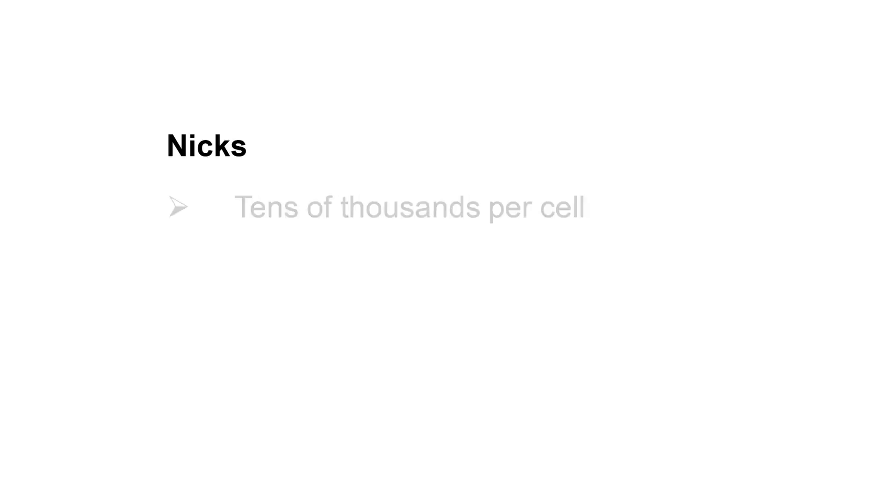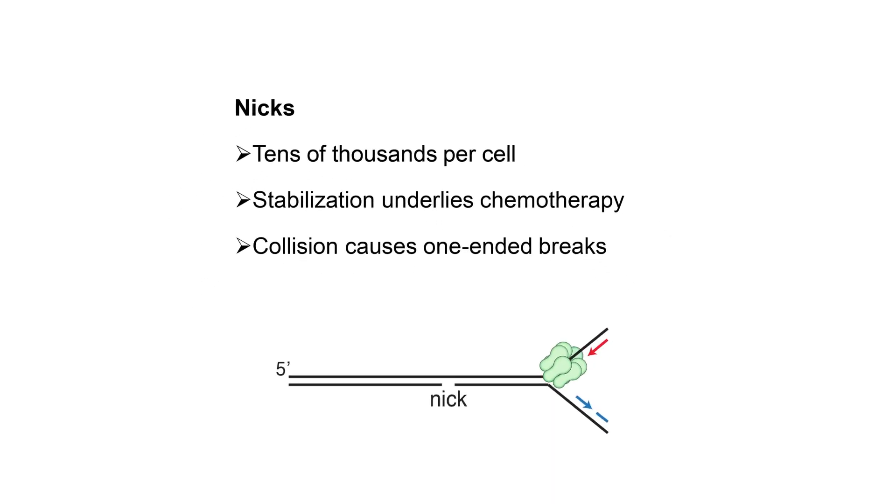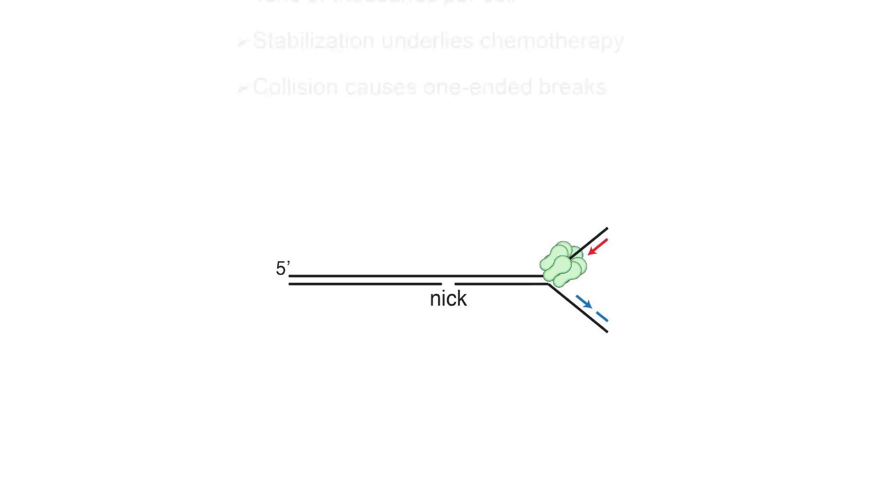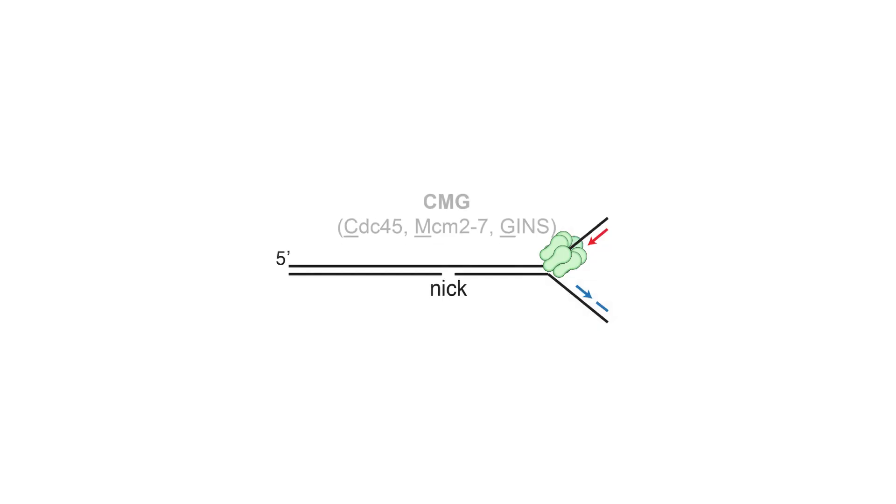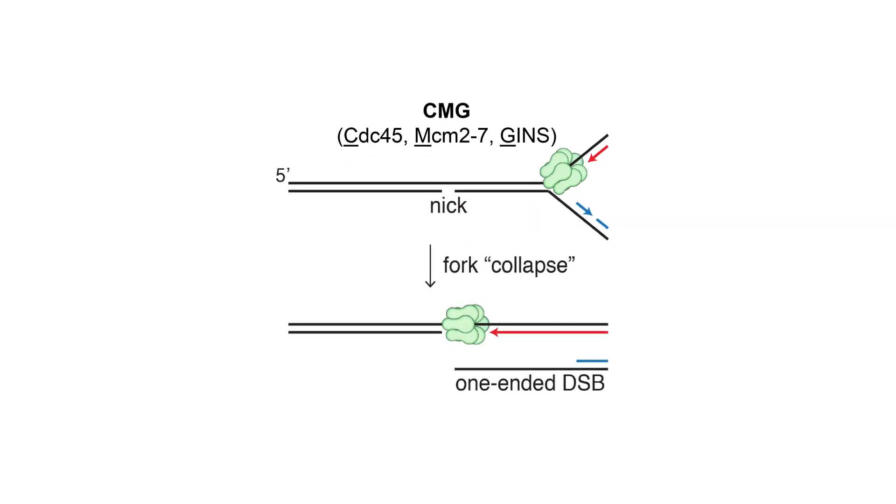Nicks are extremely abundant in mammalian cells, and stabilizing nicks is the basis for many forms of chemotherapy. It was previously appreciated that when the replisome containing the CMG DNA helicase collides with a nick, the nick collapses into a so-called one-ended double-stranded DNA break.